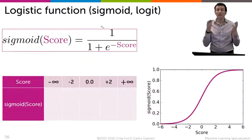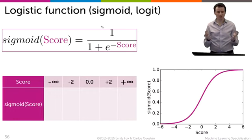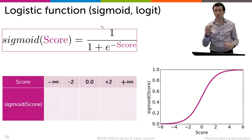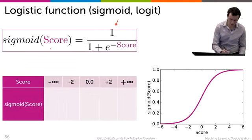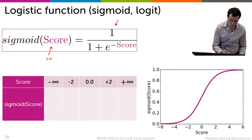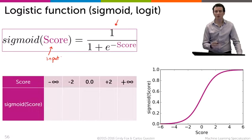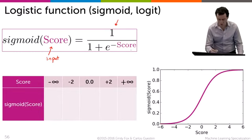For logistic regression, the link function we use is called the logistic function, sometimes called sigmoid, sometimes called logit. And it's a slightly scary function over here, which takes the score as input. The output of the sigmoid is 1 divided by 1 plus e to the minus score. So it shows up over here.